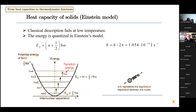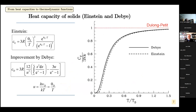Therefore Einstein came up with the idea that energy is quantized — a quantum atomic spring. With this model, the experimental data are fitted much better. There has been even an improvement by Debye, who thought there is not only one atomic spring but they are all connected in the crystal lattice, giving a real good description of the ultra-low temperature range of heat capacity.